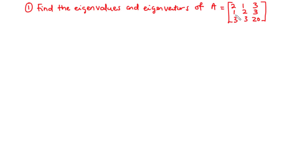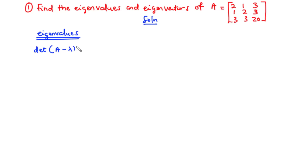So how do we find the eigenvalues as well as the eigenvectors of matrix A? First of all, let's find the eigenvalues. The solutions to the equation given by the determinant of A minus lambda I equals zero are the eigenvalues. We are going to use this equation to find the eigenvalues of matrix A.